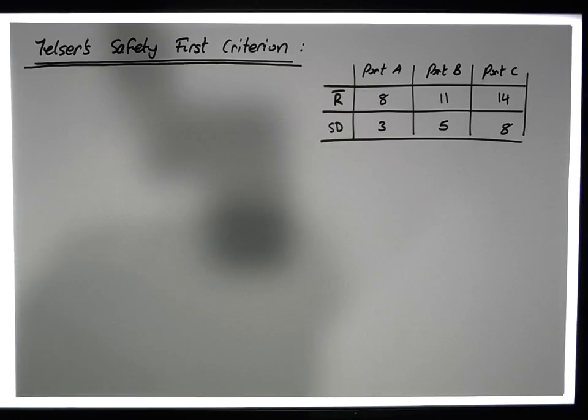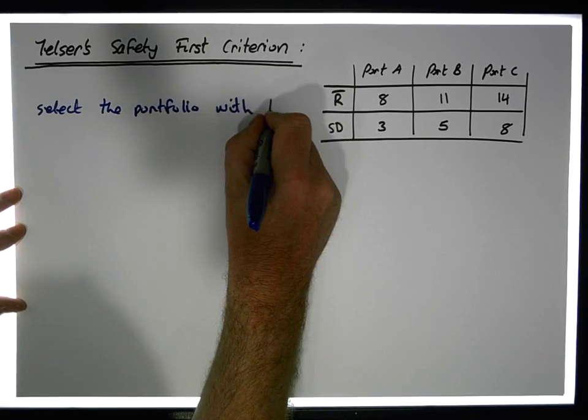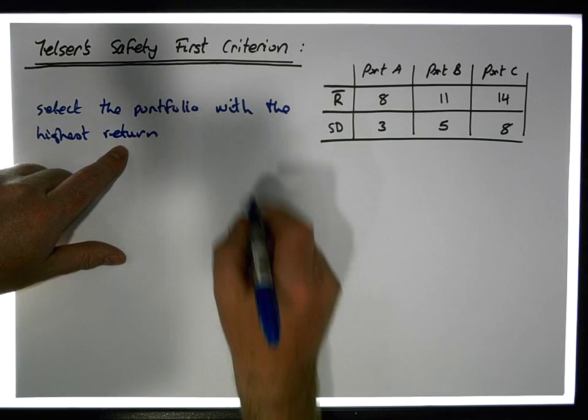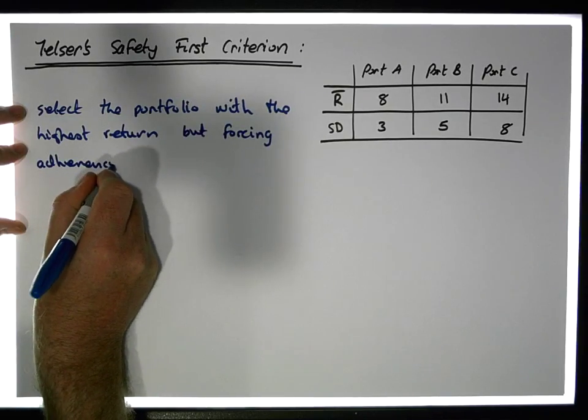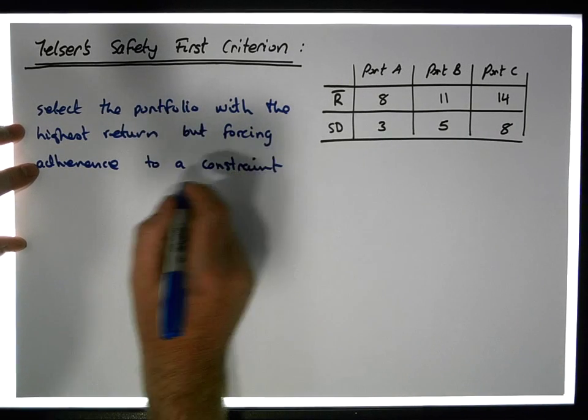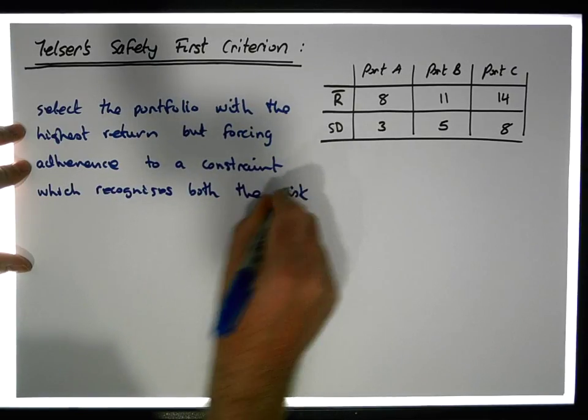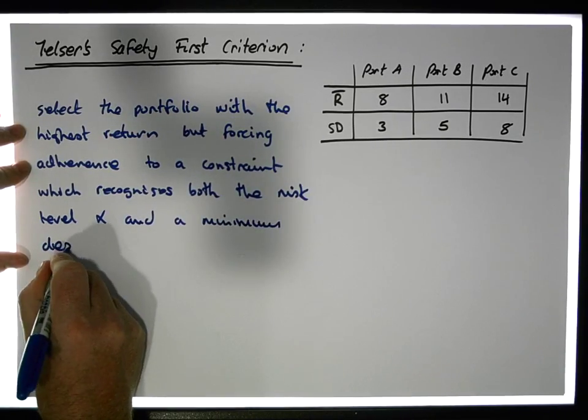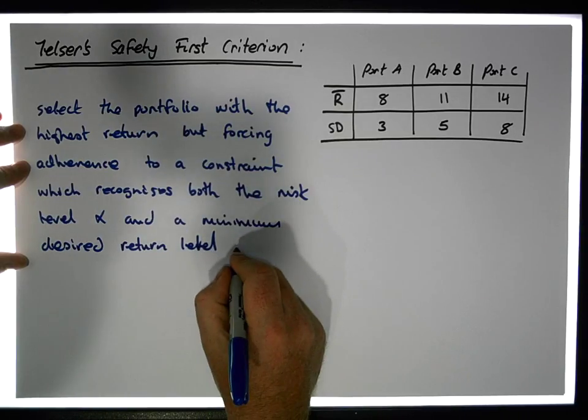Telser's Safety First Criterion is to select the portfolio with the highest return, but forcing adherence to a constraint which recognizes both the risk level (alpha) and a minimum desired return level (RL).